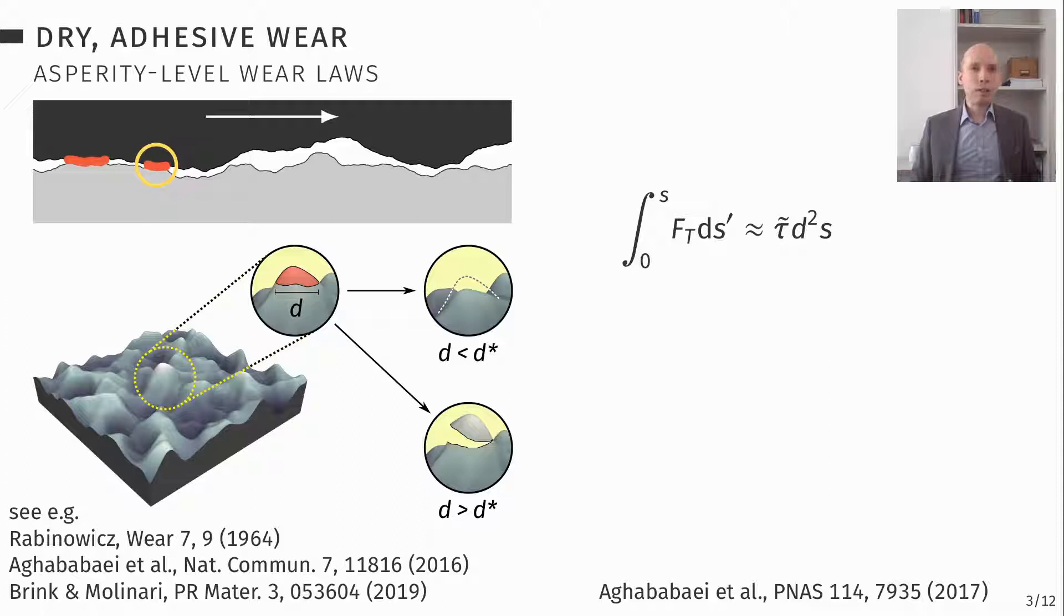What is the sliding distance you need to detach a particle? Well, it's going to be approximately equal to the diameter of the contact. That seems quite reasonable. Then we can assume that the particle that forms has a diameter also somewhat equal to d. And then we can reformulate this equation like this. And then we get something that looks a lot like Archard's wear law, except we're missing this wear coefficient.